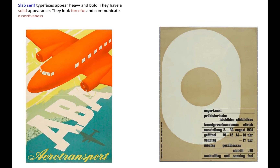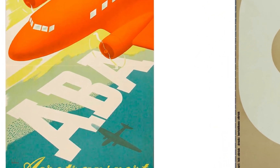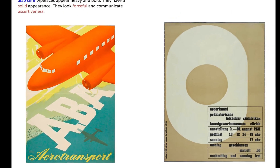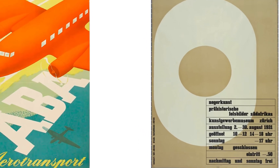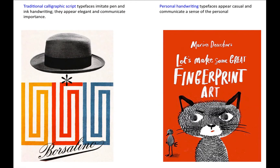Slab serif typefaces appear heavy and bold. They have a solid appearance and look forceful, communicating assertiveness. Traditional calligraphic typefaces imitate pen and ink handwriting — they appear elegant and communicate importance. Personal handwriting typefaces appear casual and communicate a sense of the personal.